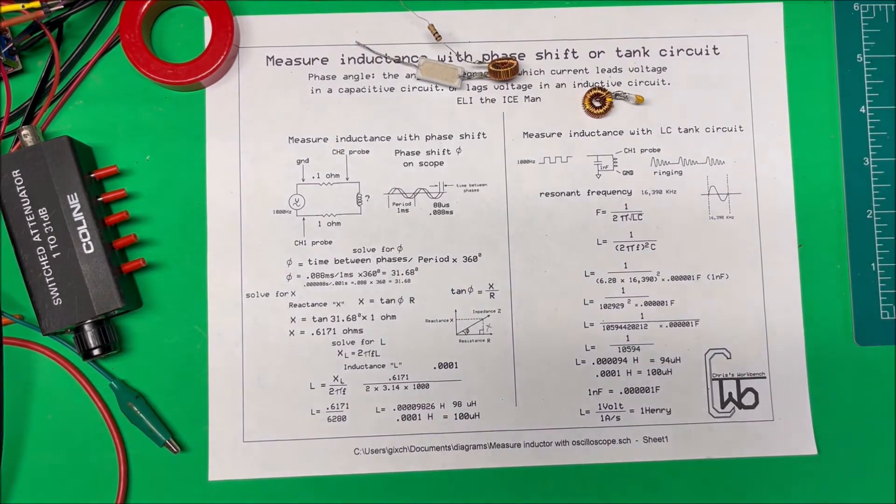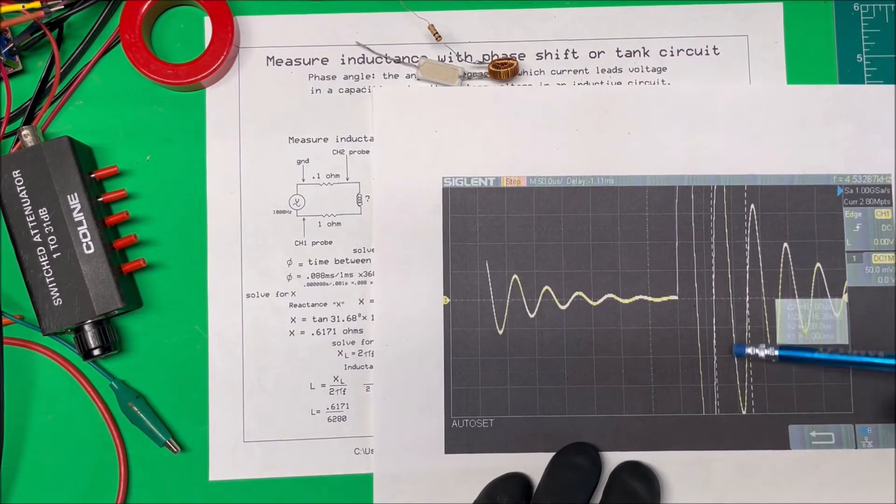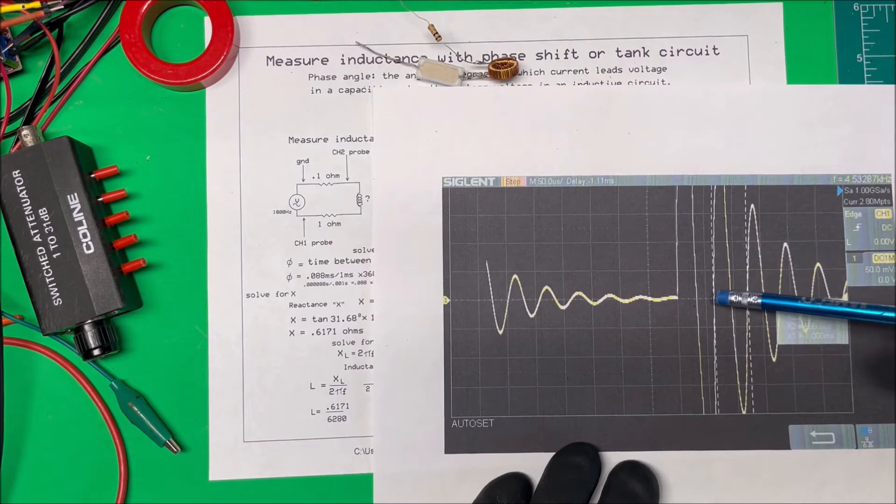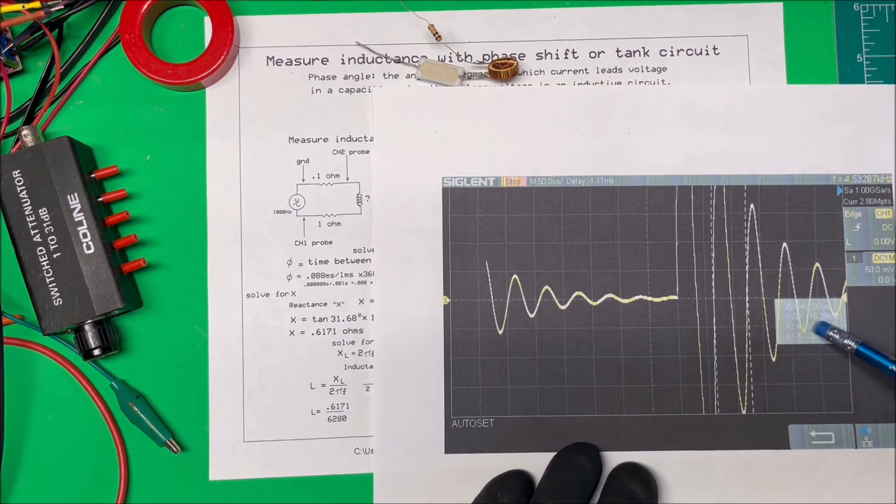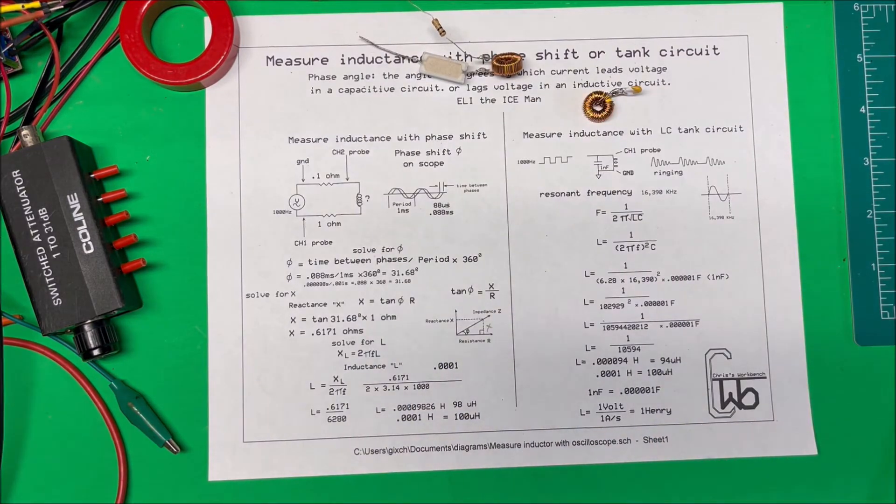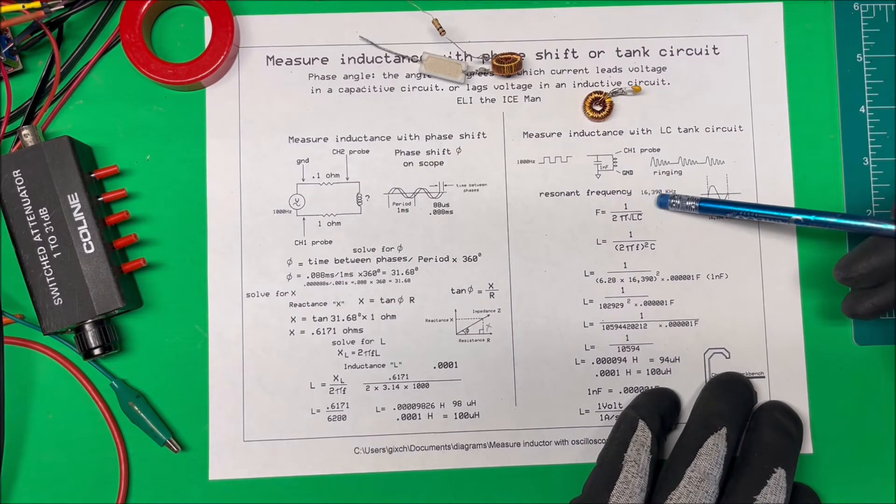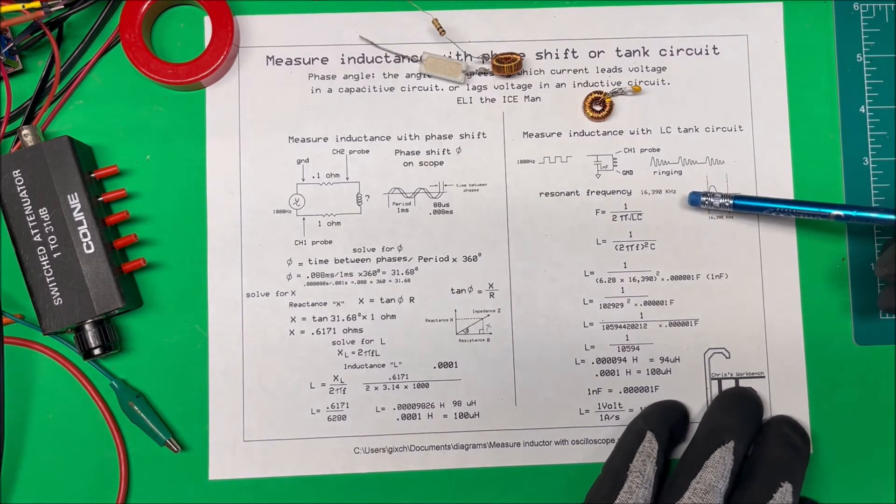Here it is on the scope. That's one cycle there. I put my two cursors on there and it tells me that the frequency of this ringing is 16.93 kilohertz.